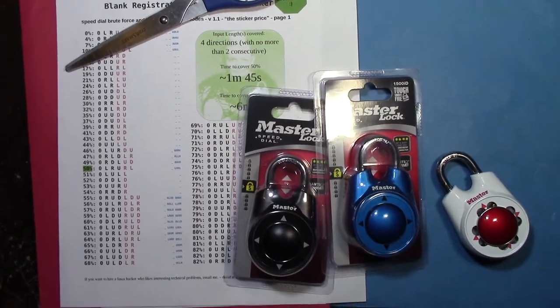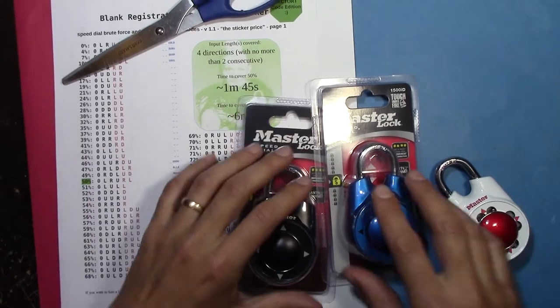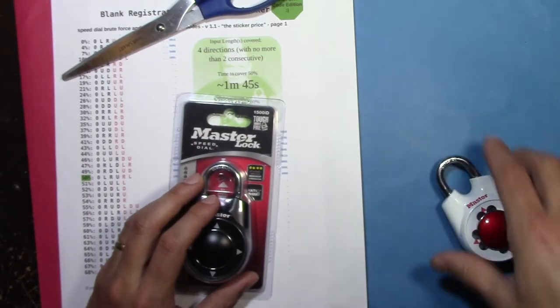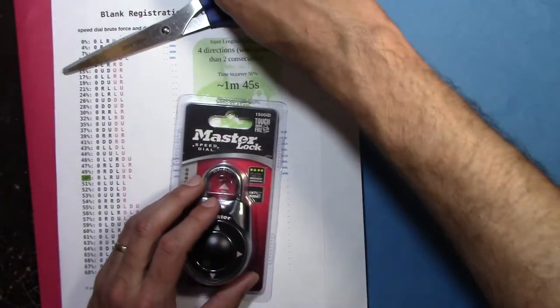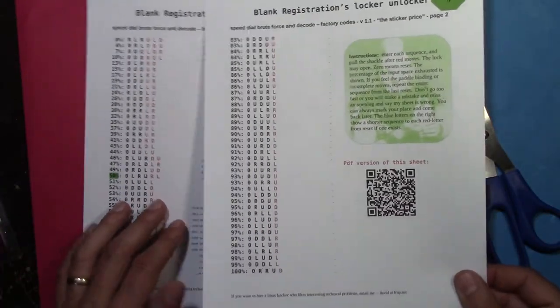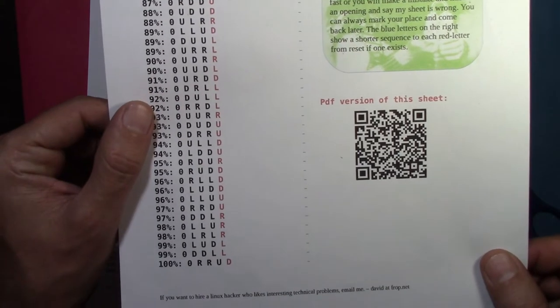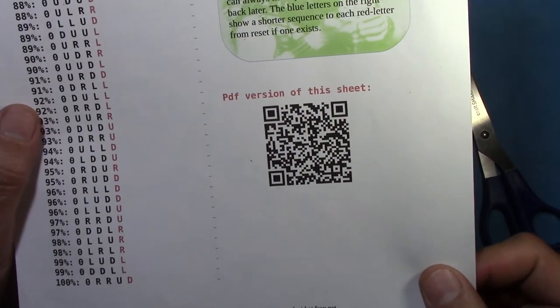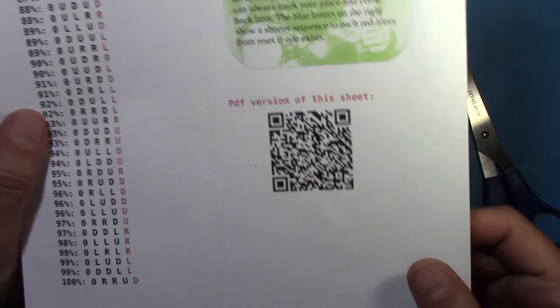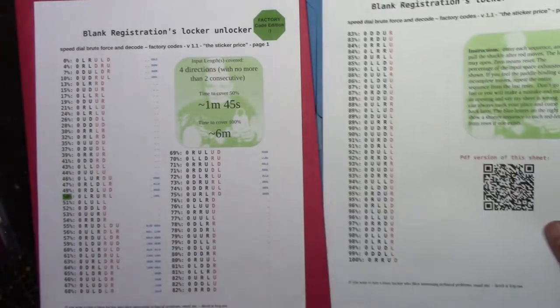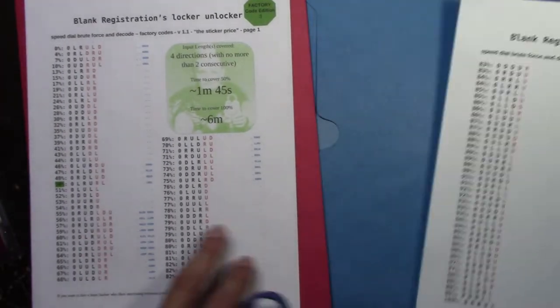I'm going to zoom in. This is a good zoom. Okay, let's start with the black one. Hopefully I won't need to get sheet two. If you want to follow along at home, here you go. Here's the link.